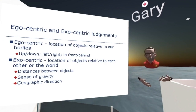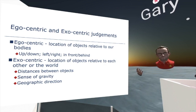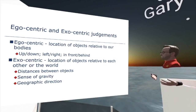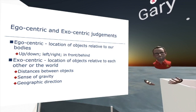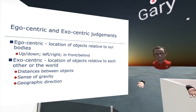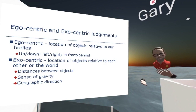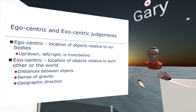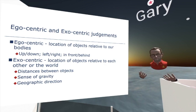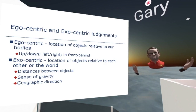The first thing is all about egocentric and exocentric judgments. Egocentric is obviously related to the individual — relative to our own bodies. In a virtual world, we need to have some sense of what is up and what is down. We can do that through having sky and a sense of ground or floor. We may also need to think about left and right — having hands within the virtual world will help with that considerably. Field of view is very important here as well.